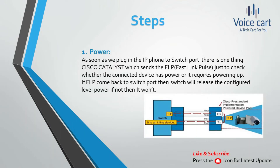The first step is about power. As soon as we plug the IP phone into the switch port, the Cisco Catalyst switch sends FLP — Fast Link Pulses — just to check whether the connected device has power or requires powering up. If FLP comes back to the switch port, the switch will release the configured level of power; if not, it won't.